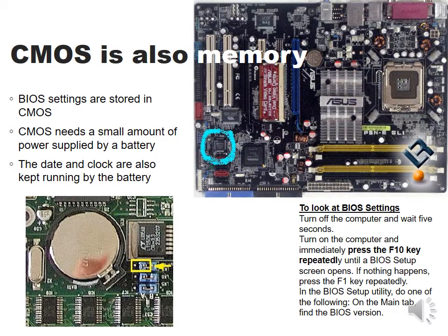The third type of memory on the motherboard is called CMOS. When the BIOS runs, it has a whole lot of settings which it needs to store somewhere, and these are stored in the CMOS. CMOS would also lose its contents if it didn't have power, so it is run by a little battery which gives it a small trickle of power and prevents it from losing its contents. The date and clock of the computer are also kept running by this battery. You can view the BIOS settings by turning off your computer, waiting a moment, then turning it on and pressing the F10 key until the BIOS setup screen appears. You will then see the types of settings stored in the CMOS.